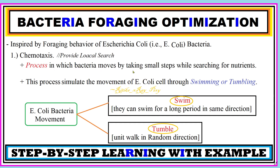The first step is chemotaxis, which provides local search for this algorithm. As bacteria move in the search space searching for nutrients, they take small steps. Just as humans can run, walk, or jump, bacteria can swim or tumble. In swimming, bacteria move in the same direction for a long period. In tumble movement, there is a random walk in a random direction.